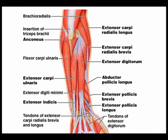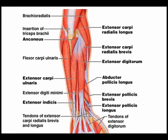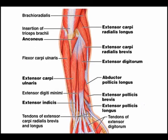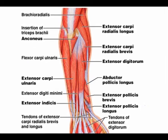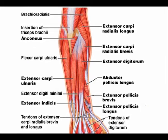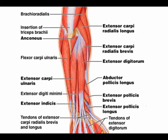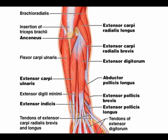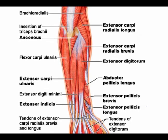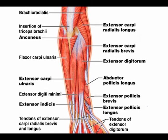The extensor carpi ulnaris is often abbreviated to the ECU. Its concentric actions are wrist extension and ulnar deviation.